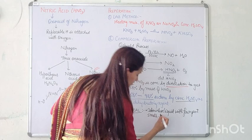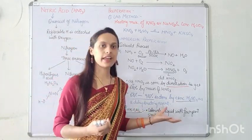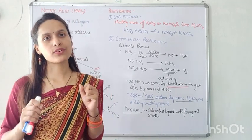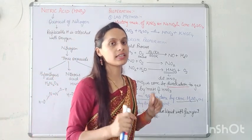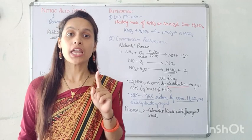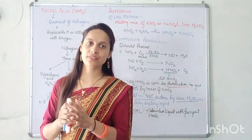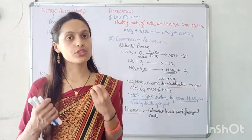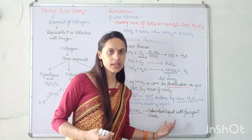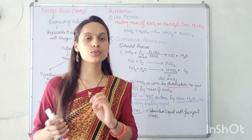Pungent smell means the smell is very pungent, just like ammonia. But in the laboratory, sometimes you see that it is yellow in color. The yellow color of nitric acid indicates an impurity. Pure nitric acid is colorless; impure nitric acid is yellow due to the formation of oxides of nitrogen — some particles of nitric acid get converted into oxides of nitrogen.